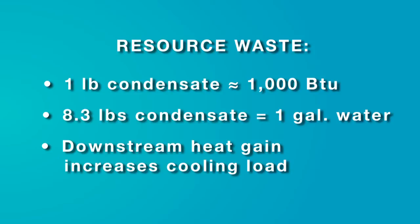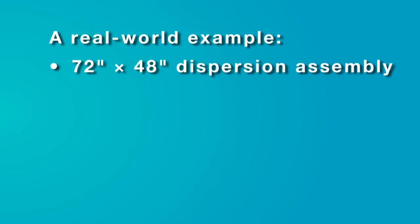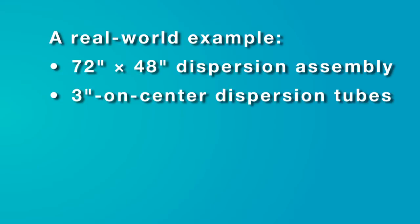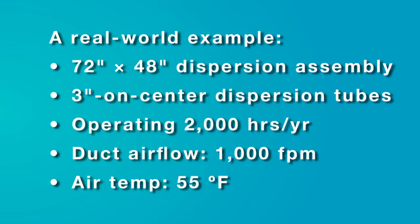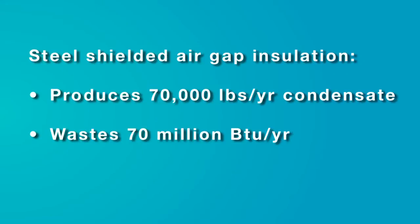What are the real-world implications? For example, a 72-by-48-inch dispersion assembly with 3-inch on-center dispersion tubes that are insulated with stainless steel shielded air gap insulation and operating 2,000 hours per year in a 1,000 feet per minute 55-degree duct airstream will produce approximately 70,000 pounds of condensate and waste approximately 70 million BTUs per year.